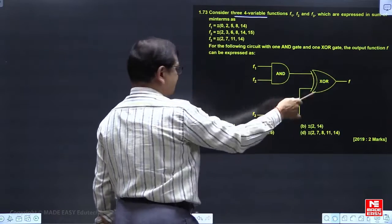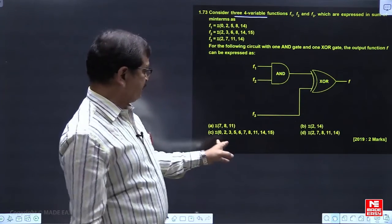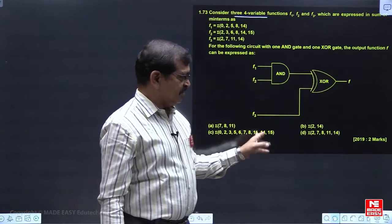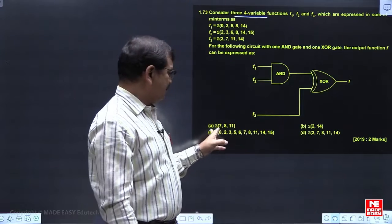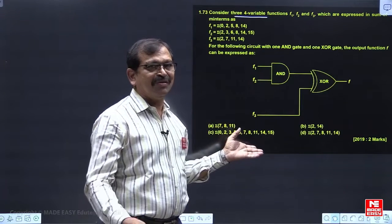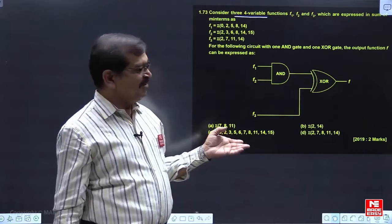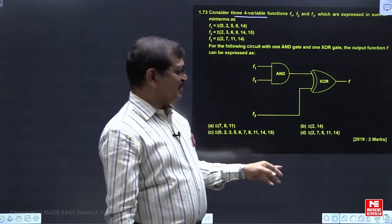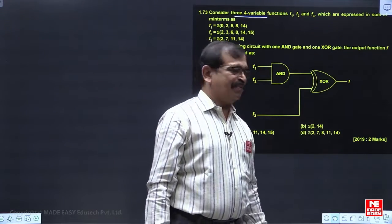The output of the function can be expressed. The answers, if you look, these answers we are looking with the minterms only. So basically the expressions are given in the compact canonical SOP form. It was the question for two marks in the 2019 GATE paper.